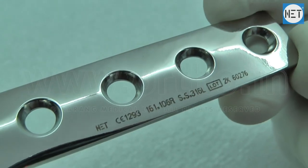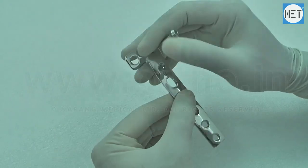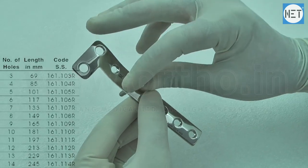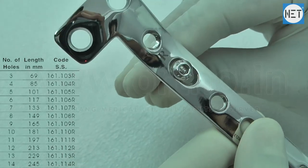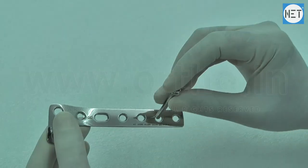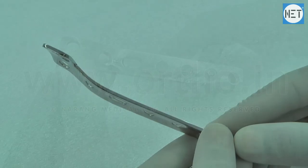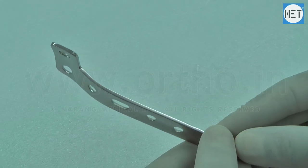These plates are used with 4.5mm cortical screws. L Buttress Plates are available in holes varying from 3-14 and lengths varying from 69-245mm. These plates are separately designed for right and left sides and are available in stainless steel and titanium.